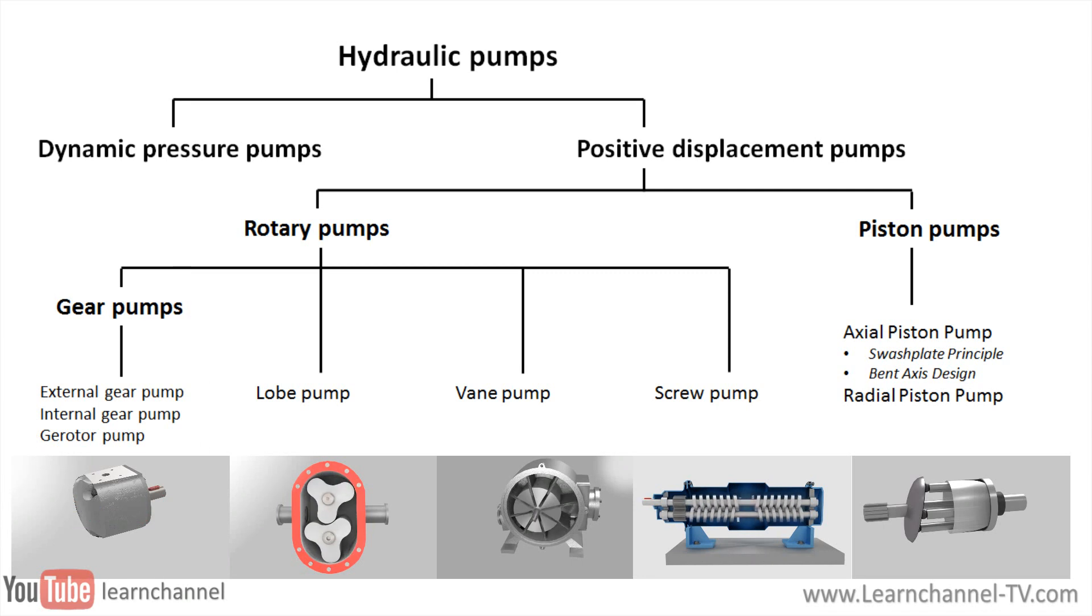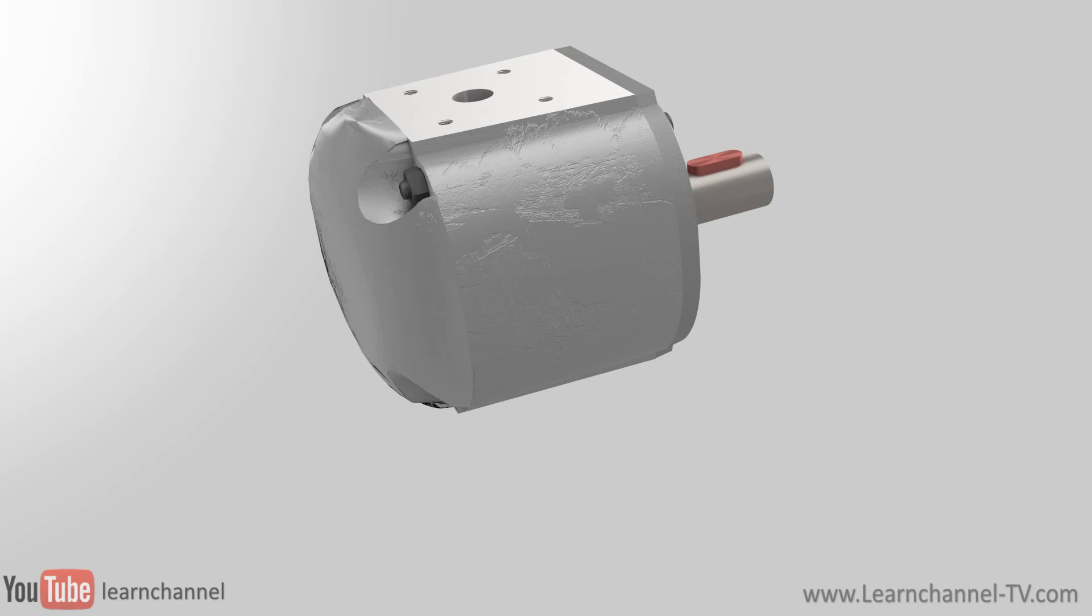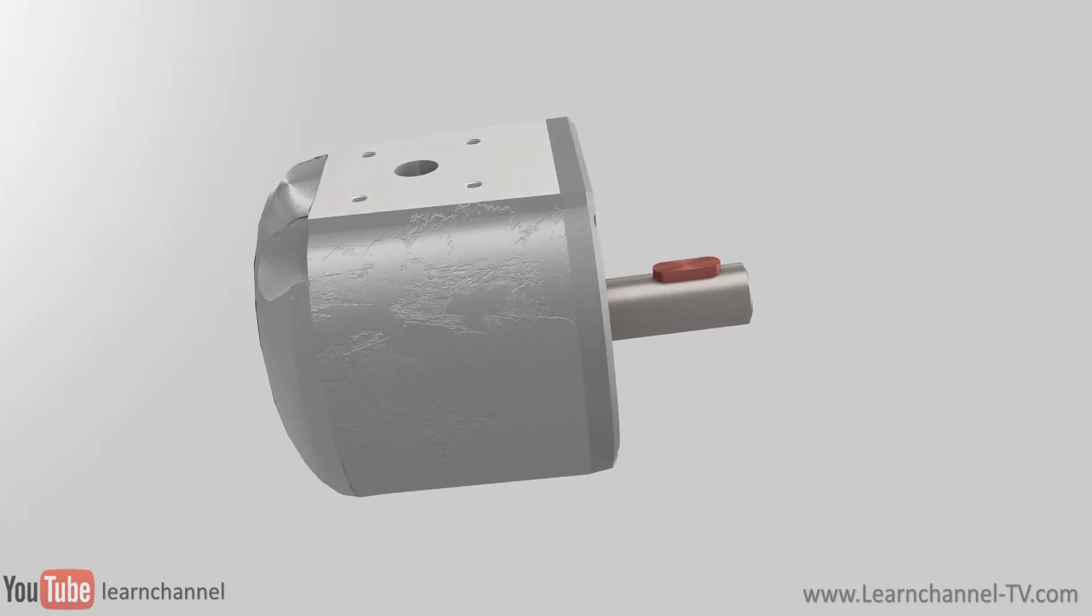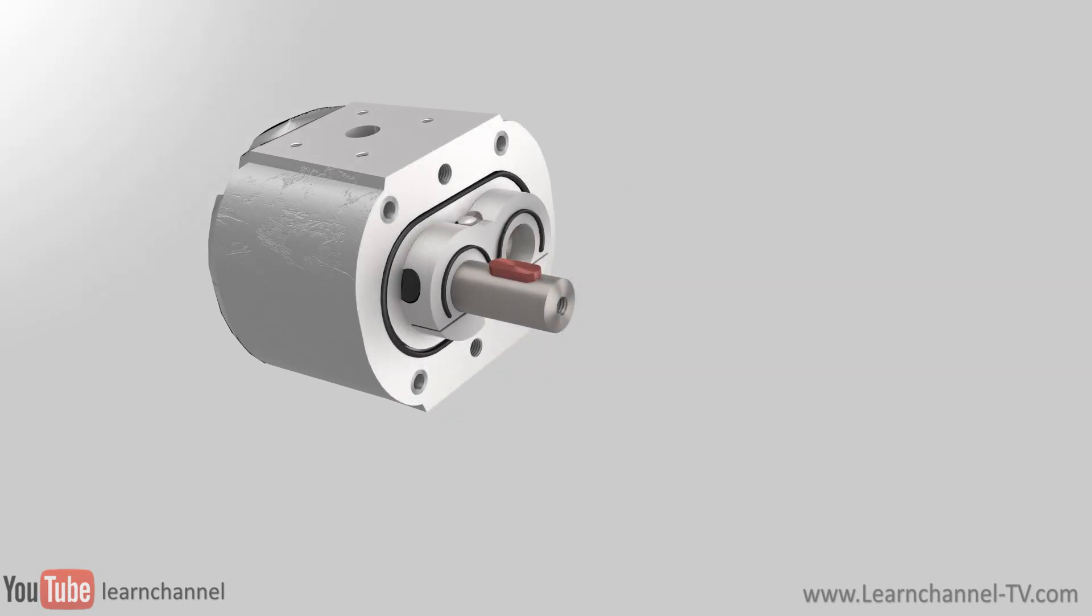The external gear pumps are compact, have few mobile parts, and therefore are relatively inexpensive. Two gears, usually equal in size, mesh with each other inside the housing.